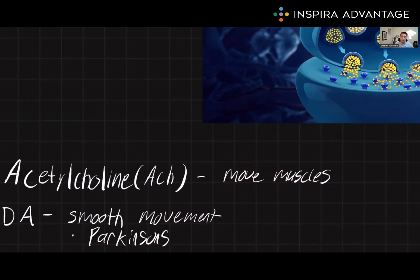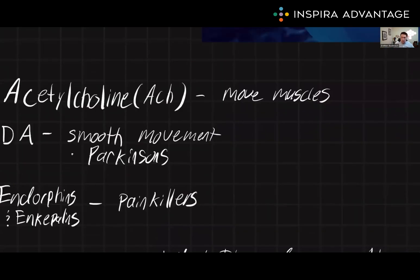Interestingly, one of the treatments for Parkinson's is to basically flood the brain with a precursor of dopamine called L-DOPA. Next up are endorphins and enkephalins.